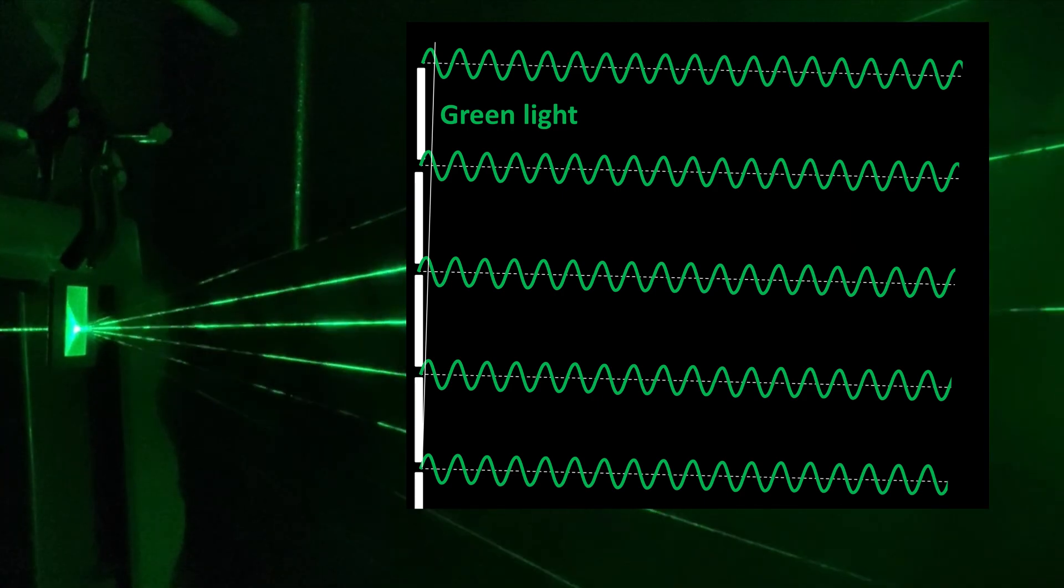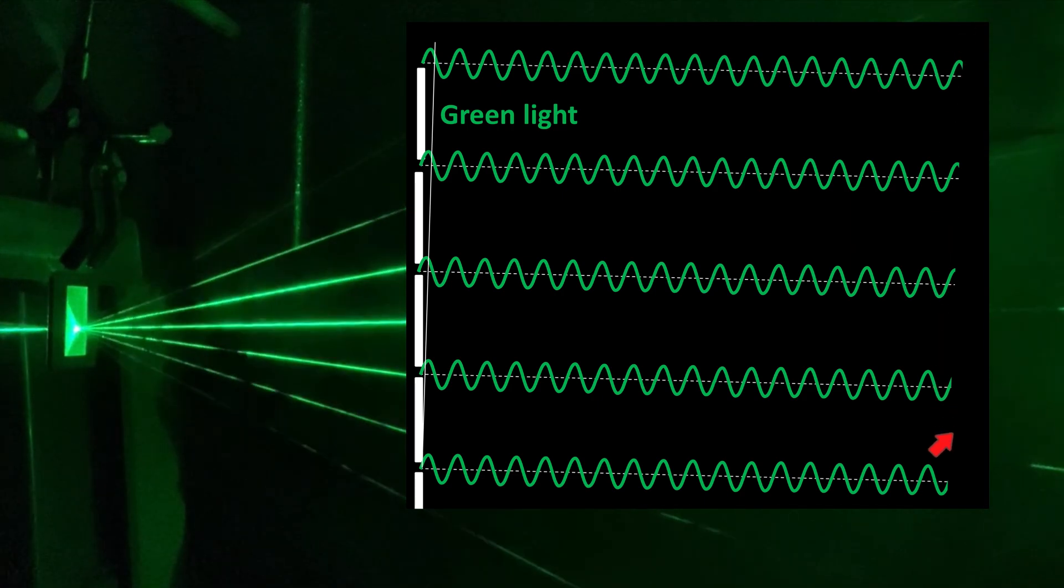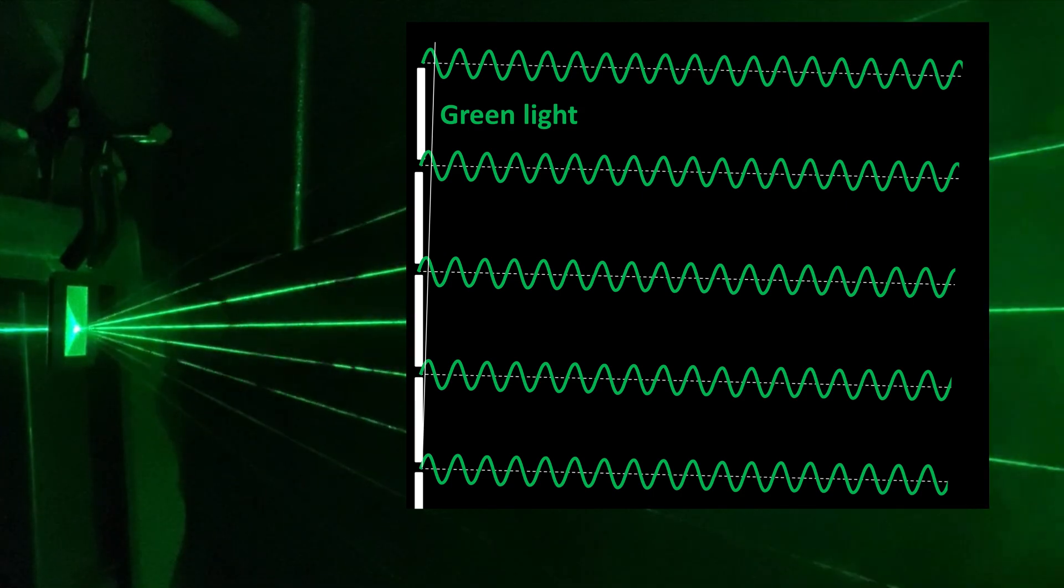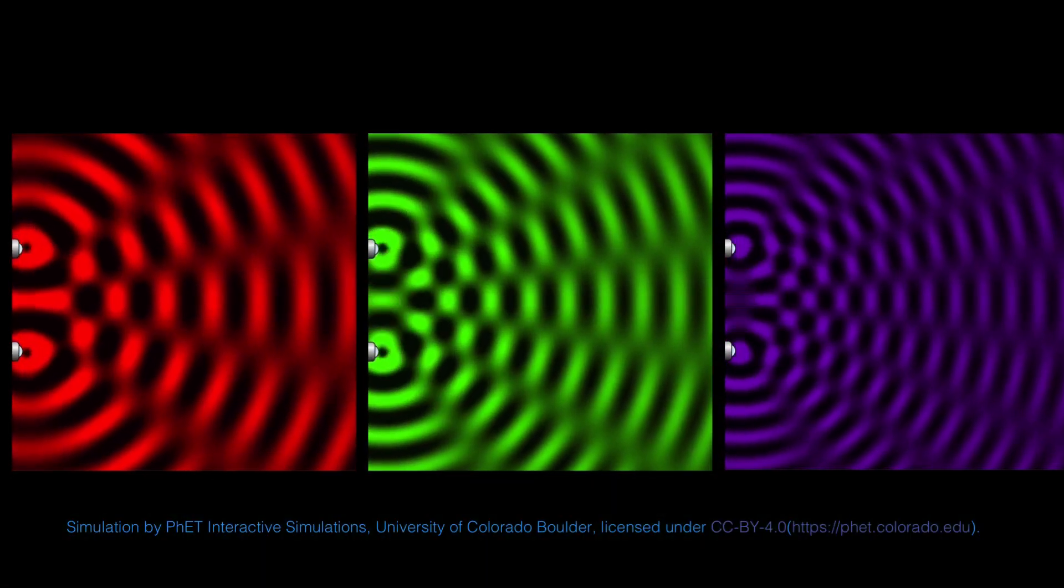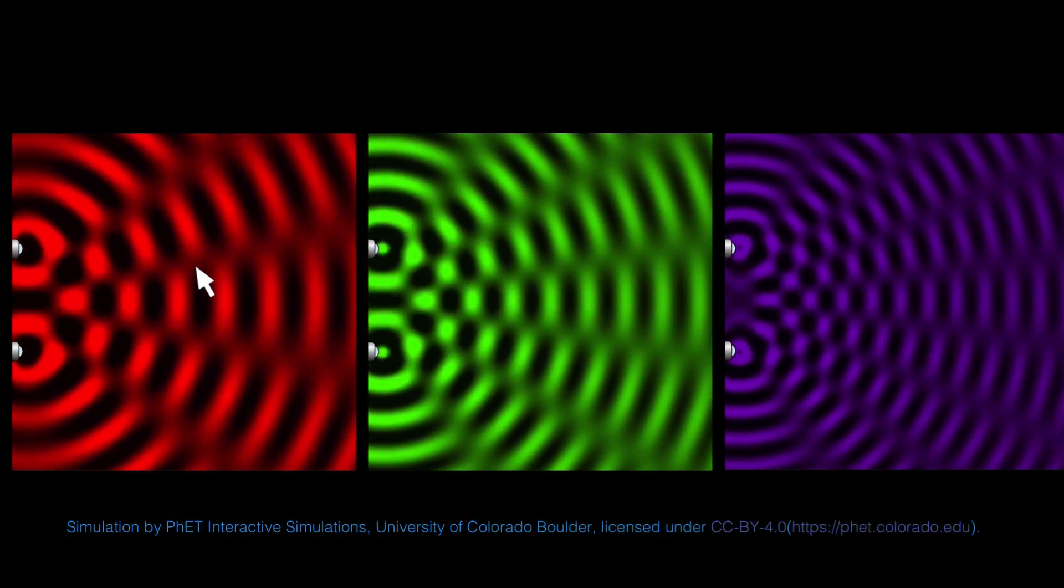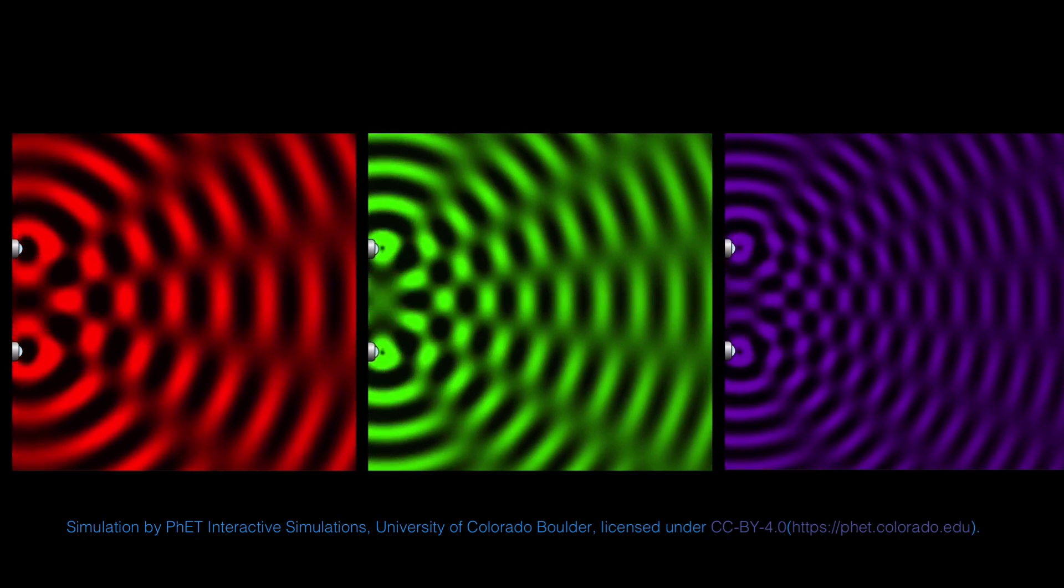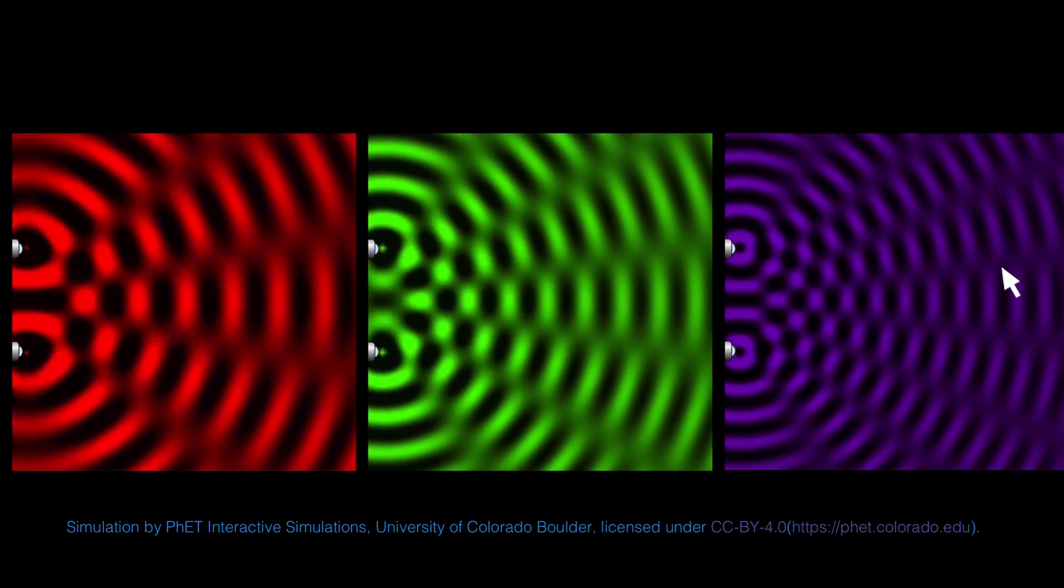And so we get waves of all different phases arriving, and these destructively interfere. A peak of one wave coincides with the trough of another, and they cancel each other out. Again, we can see this in the FET animation, but with just two sources of light, the dark region is much narrower than it is with the diffraction grating.